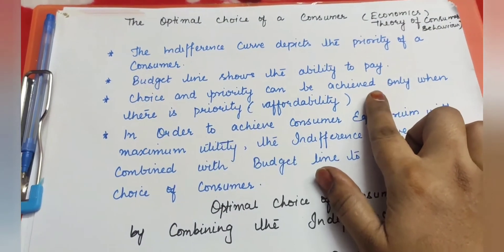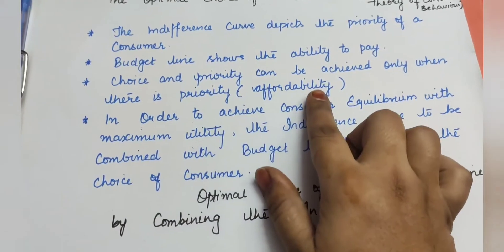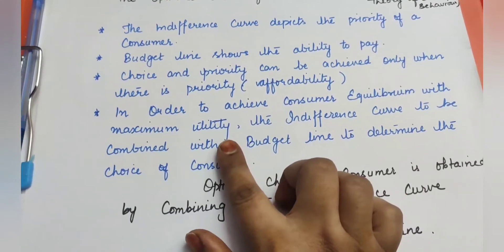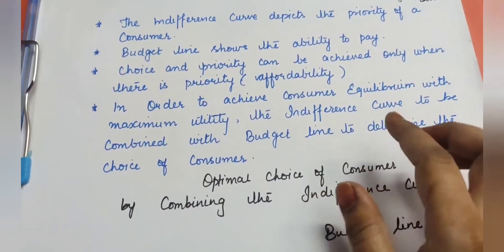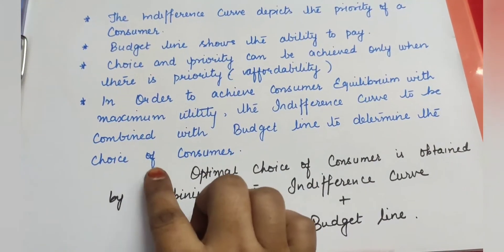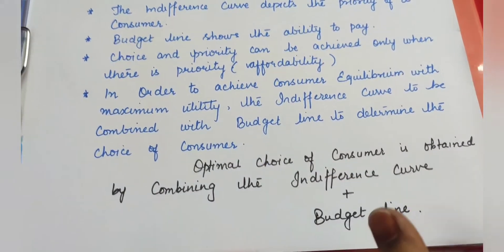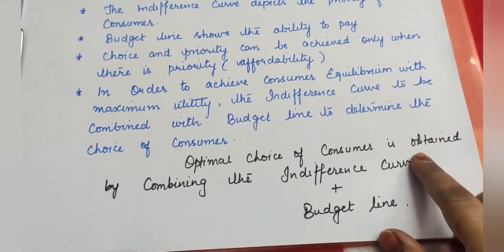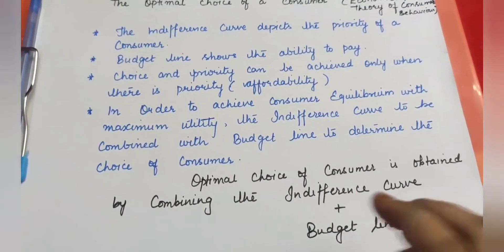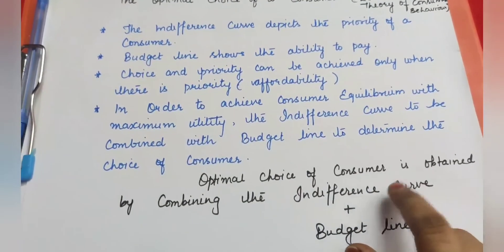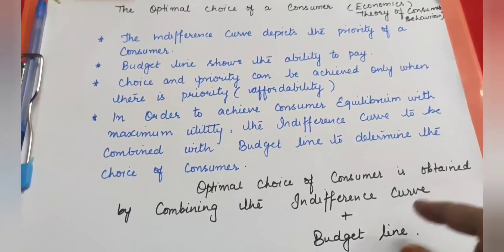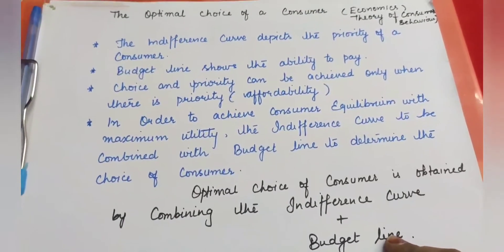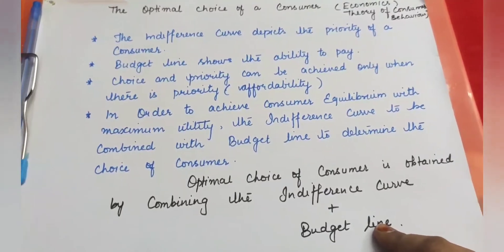Choice and priority can be achieved only when there is affordability. In order to achieve consumer equilibrium with maximum utility, the indifference curve must be combined with the budget line to determine the choice of the consumer. Before determining the optimal choice, let's understand what the indifference curve and budget line are individually, so that by combining them we can easily determine the optimal choice of a consumer.